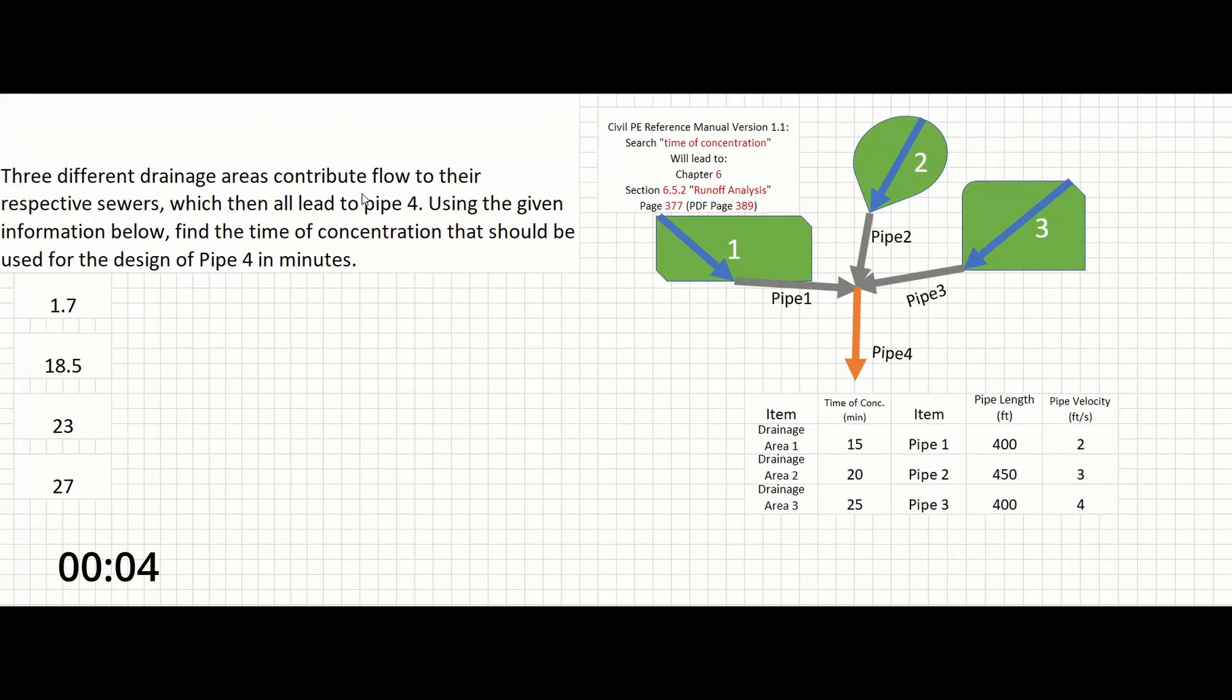Three different drainage areas contribute flow to their respective sewers, which then all lead to pipe 4. Using the given information below, find the time of concentration that should be used for the design of pipe 4 in minutes.